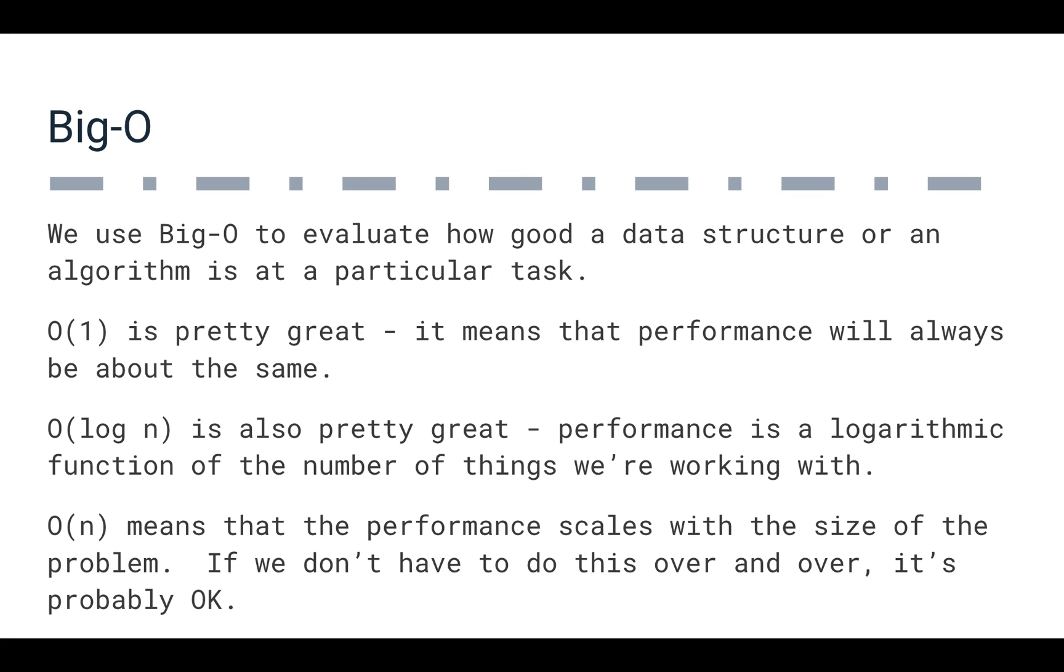We use Big O to evaluate how good a data structure is or an algorithm is at a particular task. So Big O of one is great. It means that our performance is always going to be the same. Big O of log n is also pretty good. It means that our performance is going to be reasonable no matter how many things we're working with. If we're looking at 100 things, our performance is going to be reasonable. If we're looking at a thousand things, our performance is not going to be that much worse.